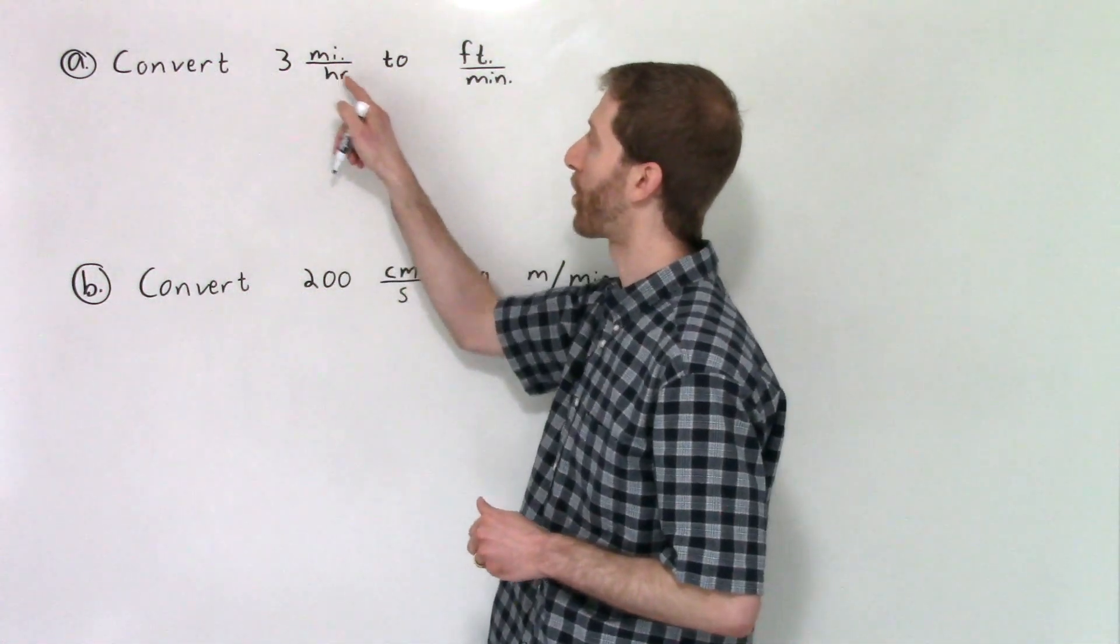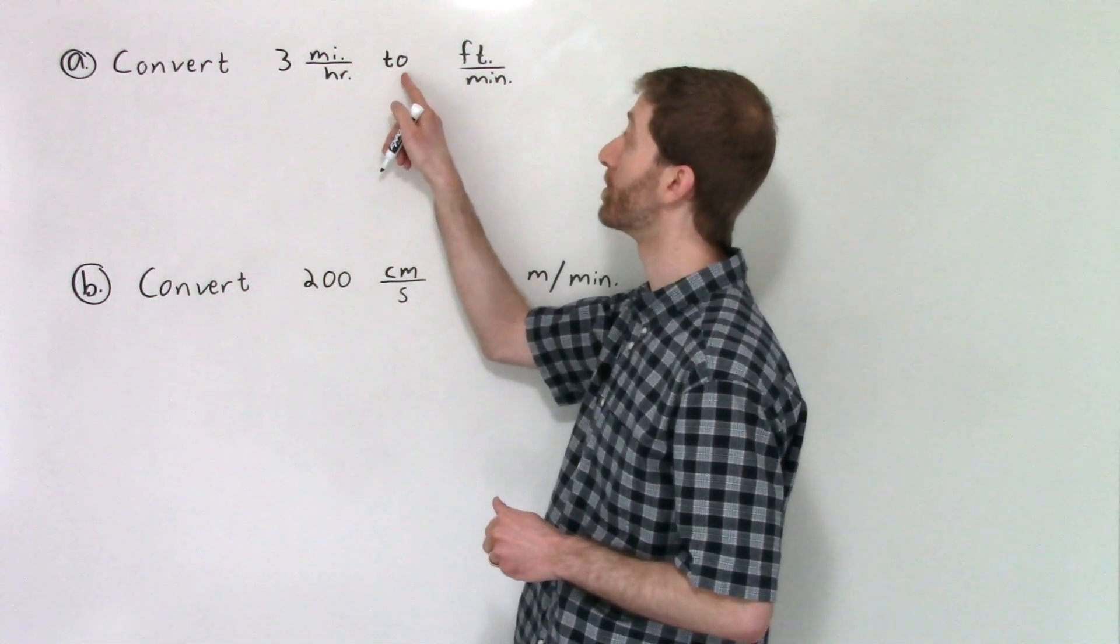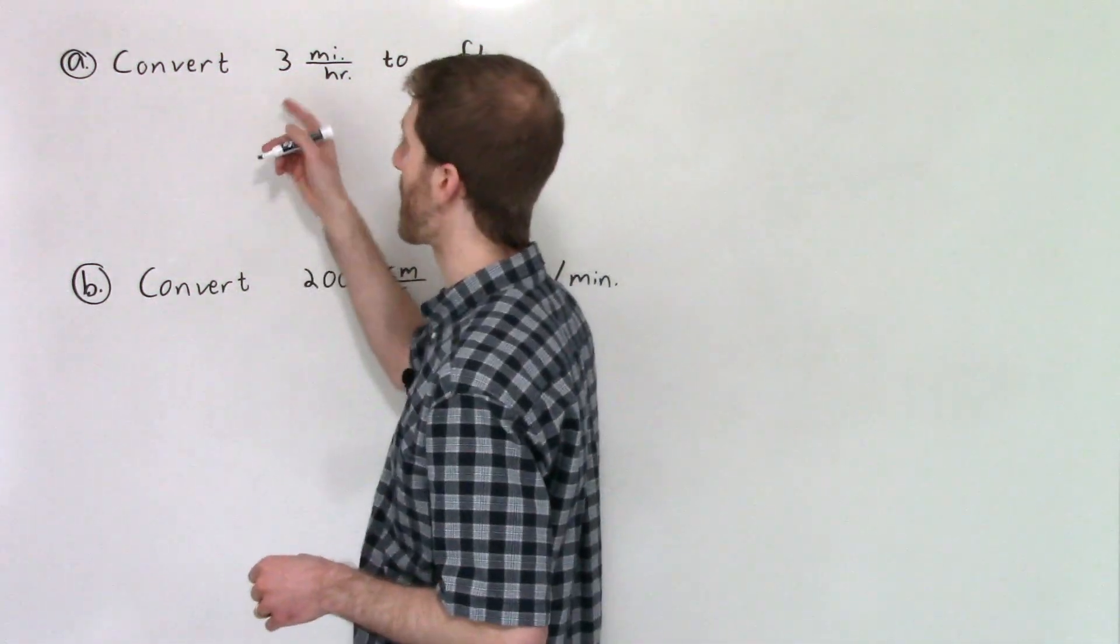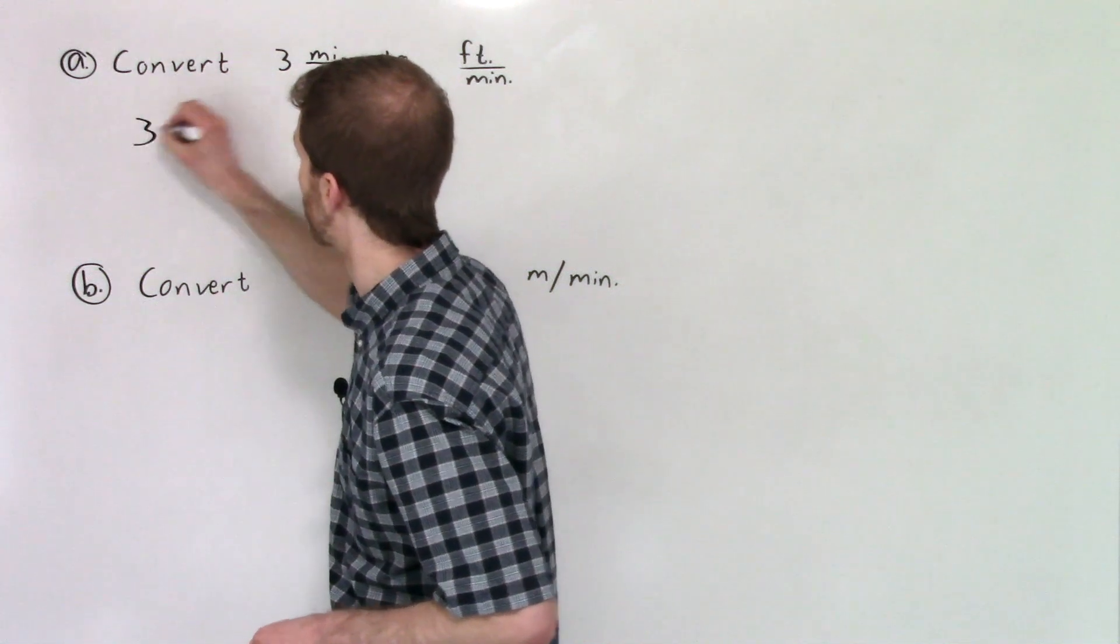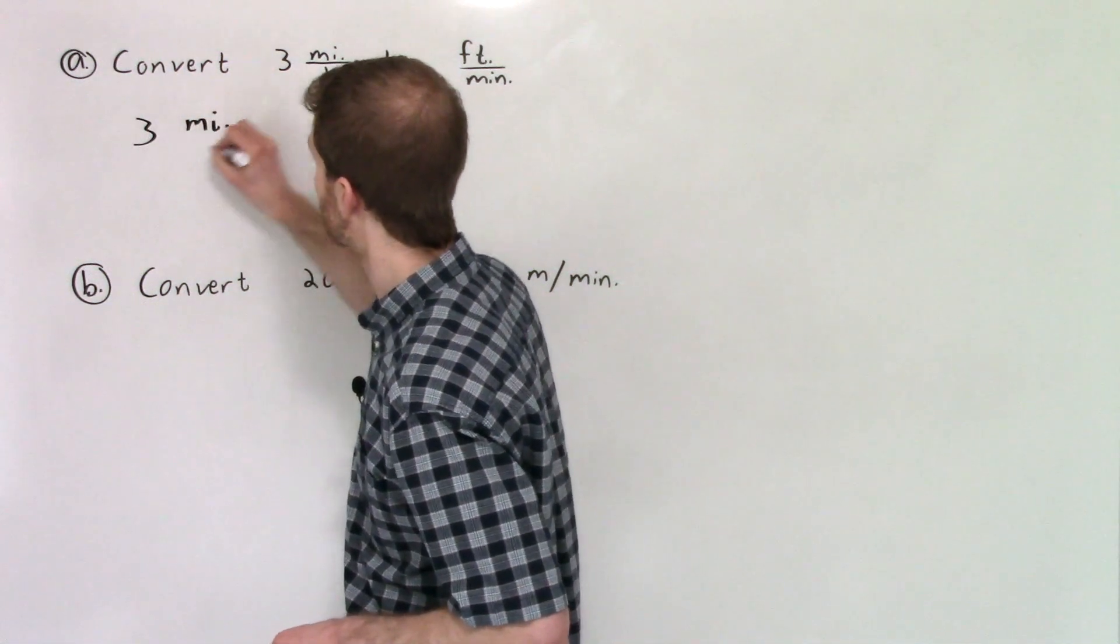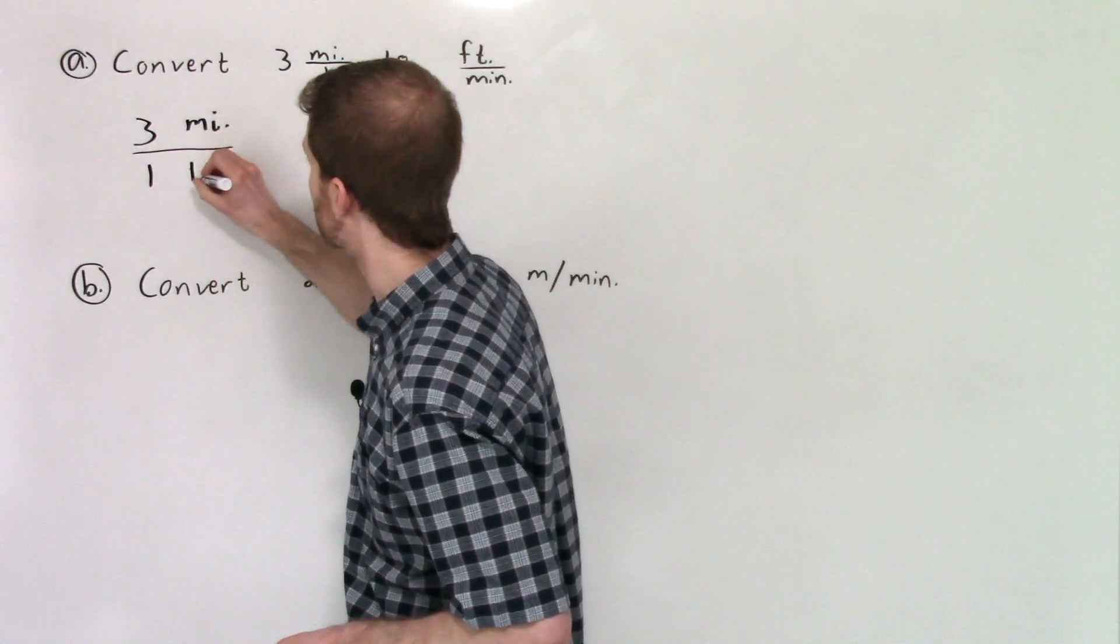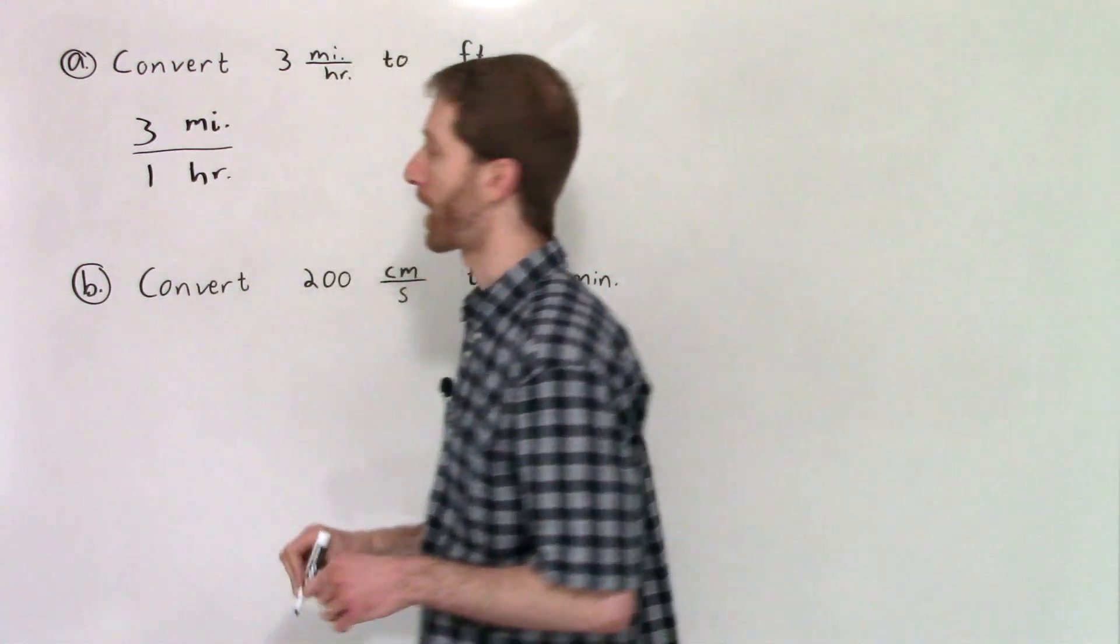Three miles per hour, we're going to convert into units of feet per minute. How do we do that? We start out just with this base amount that we have. So we have three miles per, and then I'll just write it as one hour because that's technically what it is. Three miles per one hour.